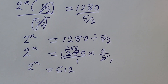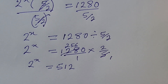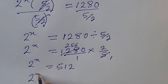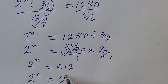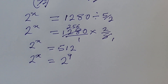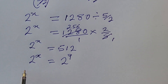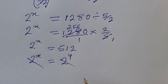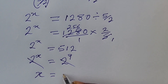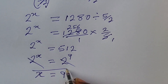We can express 512 in base 2, since our base number is 2. So 512 equals 2 to the power of 9. Now the bases are the same on both sides, so we equate the exponents, giving us x equal to 9.